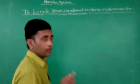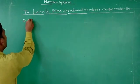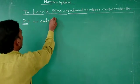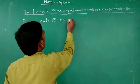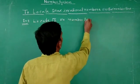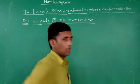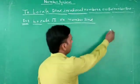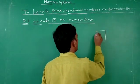How can you locate an irrational number on the number line? We take one example of an irrational number. Locate root 2 on the number line. So, suppose this is a square — we take a square OABC.